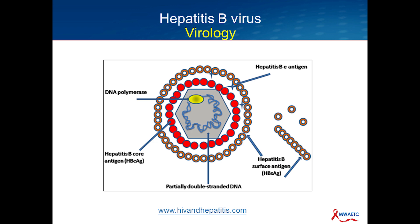Hepatitis B is a partially double-stranded DNA virus. The hepatitis B surface antigen is a lipoprotein that's part of the envelope, as shown here, and that contains the major site for binding of neutralizing antibodies. The surface antigen can circulate as part of the virion or independently as viral particles — it is the hallmark of chronic infection. There are two nucleocapsid proteins: the E antigen and the core antigen. In contrast to antibodies to surface antigen, antibodies to these elements do not confer lasting immunity; they basically tell us the patient has been exposed to the virus.